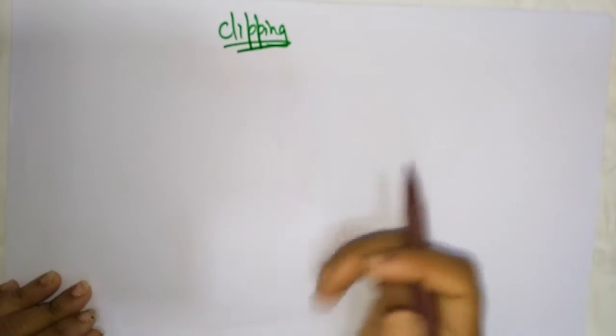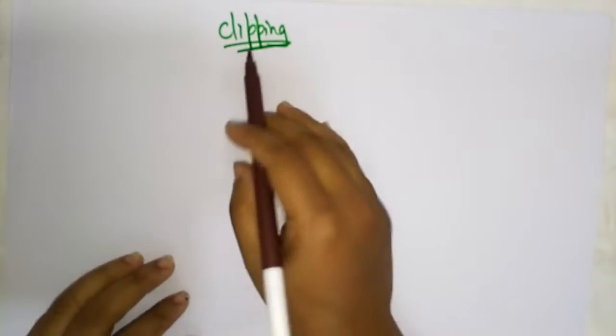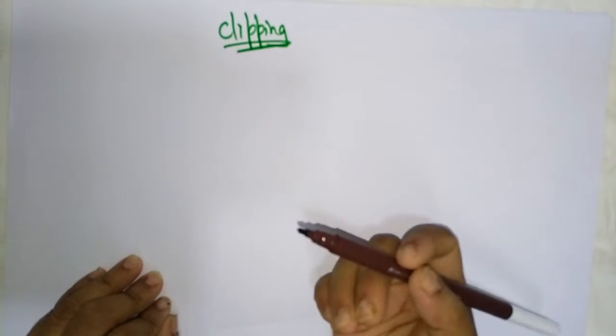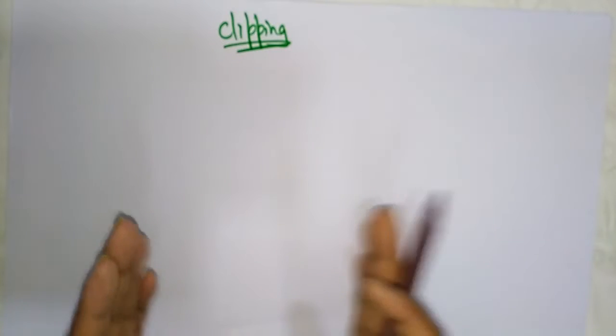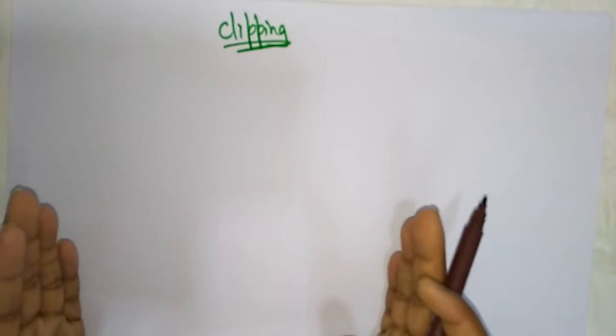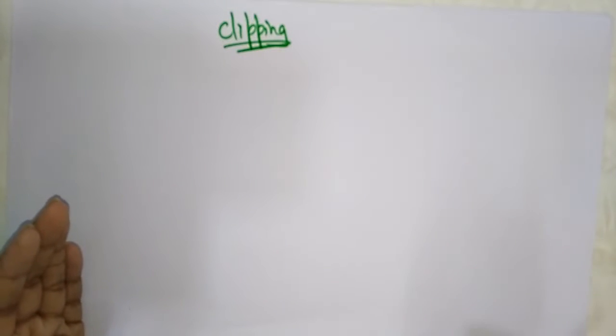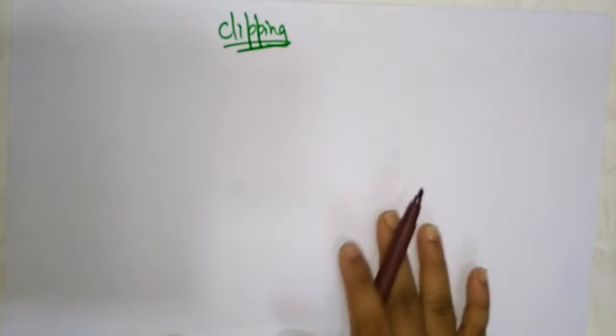Hi students, welcome back. Let's move on to the next topic in computer graphics, which is clipping. By saying this word, what do you understand? Clipping — we are clipping a part, means we are cutting a part. Whatever the unnecessary part is there, that has to be removed. That is what we call clipping.